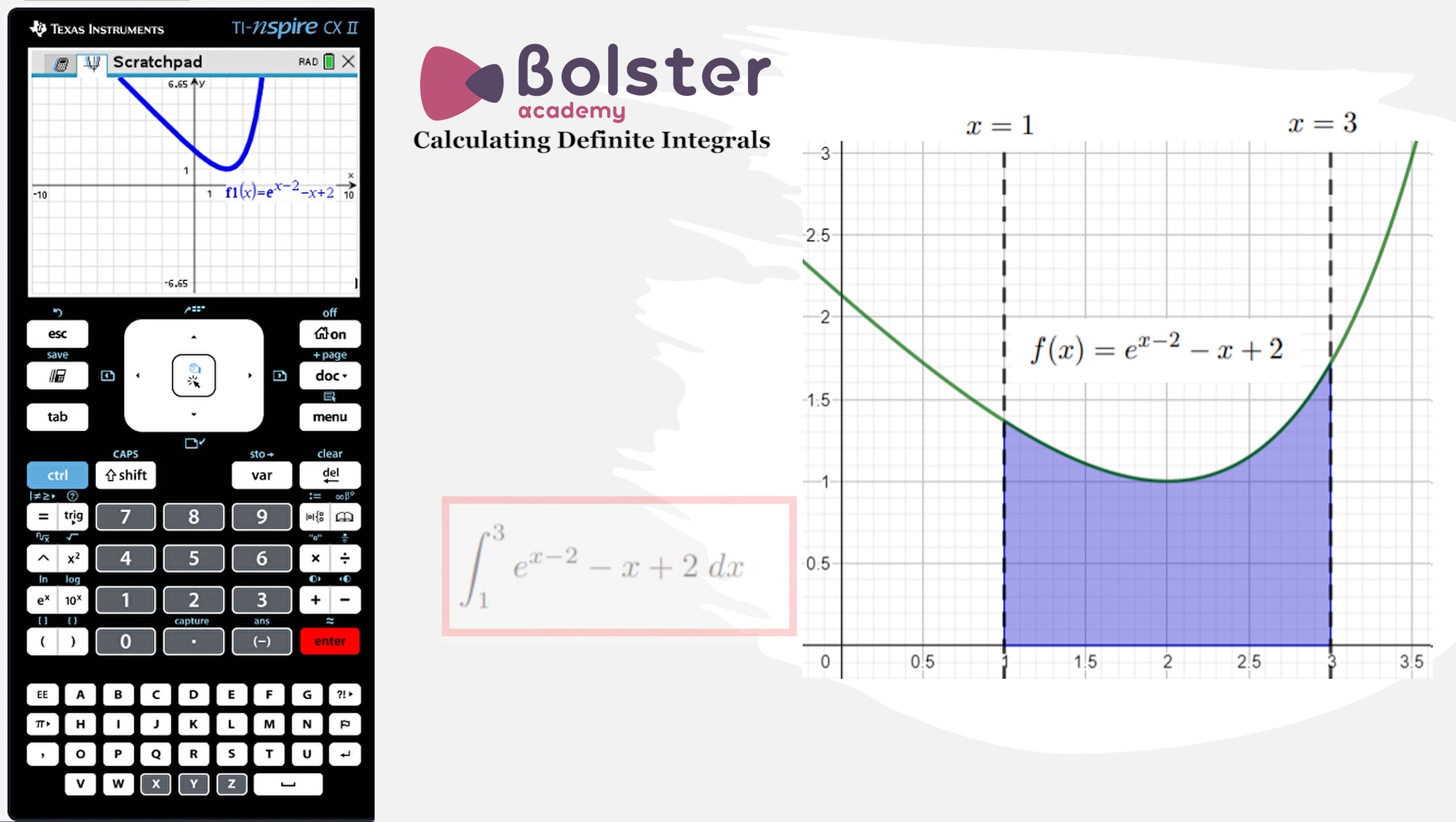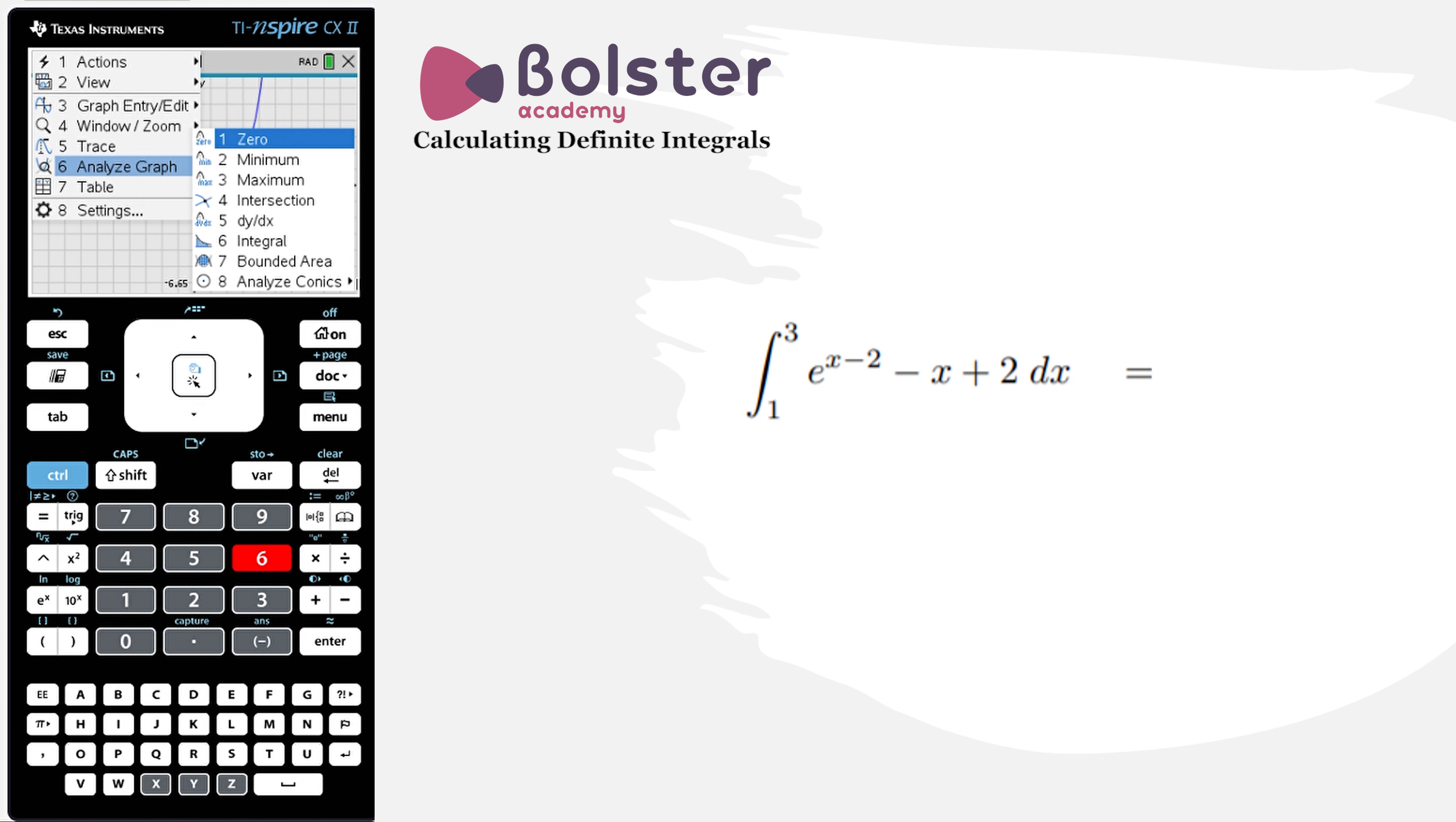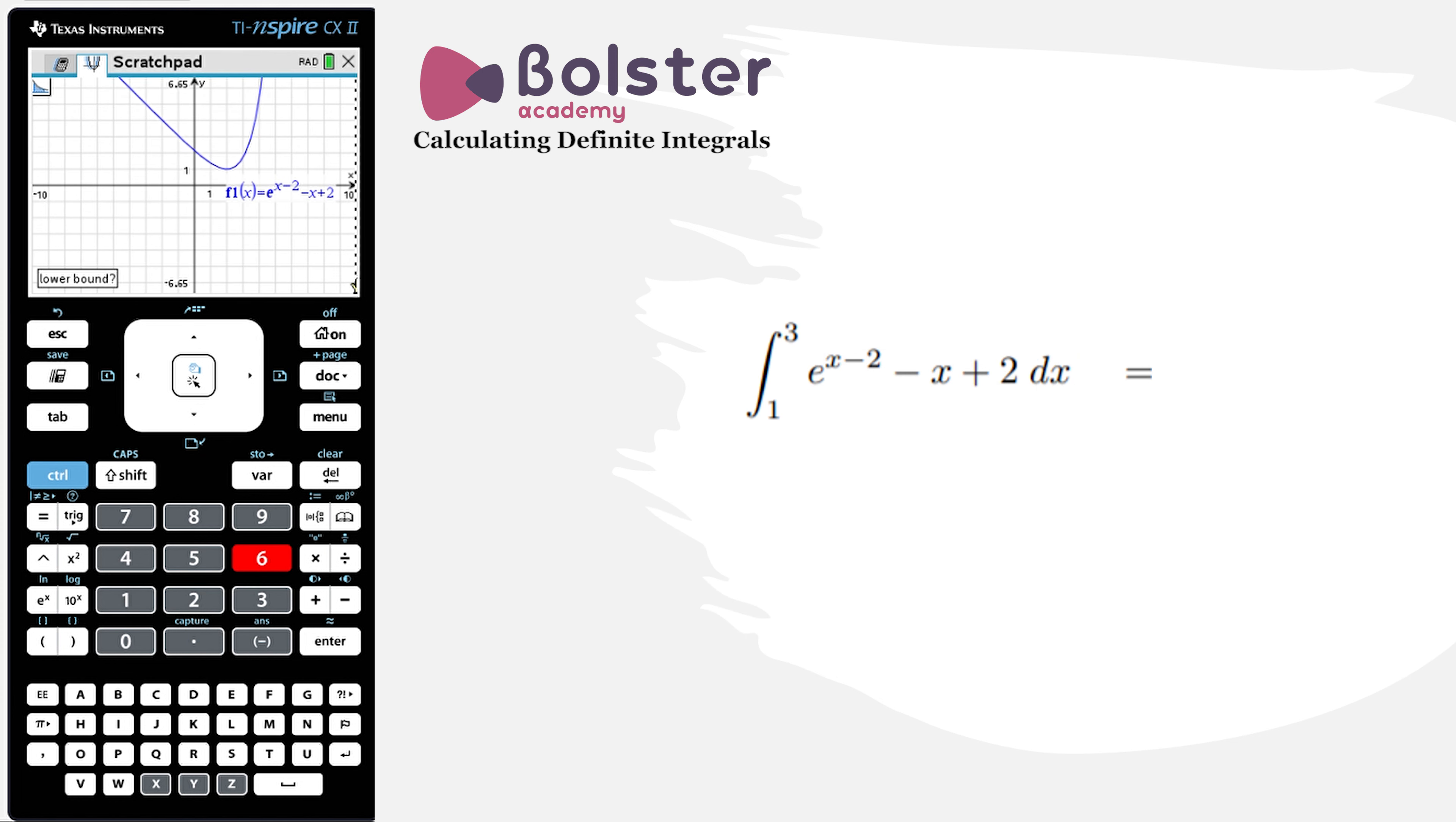So this is actually just an integral. This will be the integral of the function from 1 to 3. So I go into menu, I can do analyze graph, option number 6, and I can do integral, option number 6.